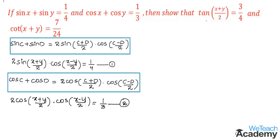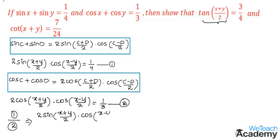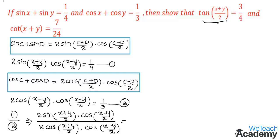Now we have to prove the value of tan((x+y)/2). Since sin divided by cos is tan, let us divide equation 1 by equation 2. We get 2 sin((x+y)/2) into cos((x−y)/2) in the numerator, divided by 2 cos((x+y)/2) into cos((x−y)/2) in the denominator, which equals 1 by 4 divided by 1 by 3. The factor 2 and cos((x−y)/2) cancel from numerator and denominator, leaving sin divided by cos, which is tan.